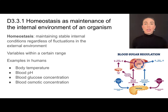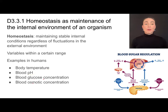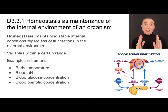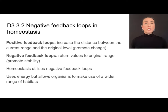Examples in humans include body temperature, blood pH, blood glucose concentration, and osmotic concentration — all of those things that need to be kept within a narrow range. We'll be talking a lot about feedback loops, so let's quickly define the two types of feedback loops.